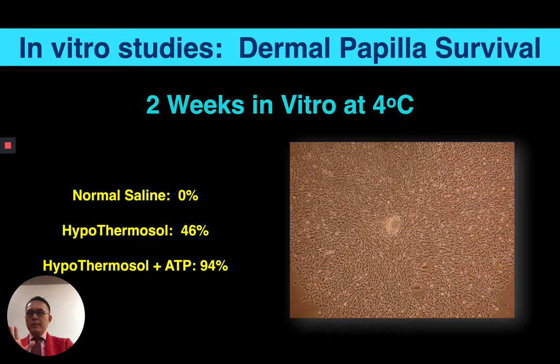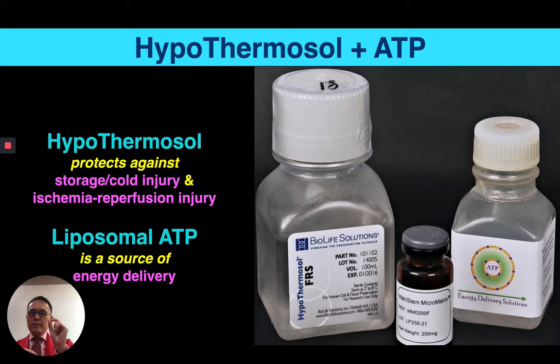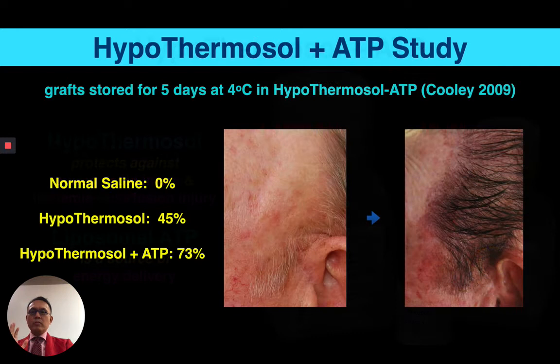Hypothermosol ATP — I like to call it Reese's peanut butter cups: they work together. Hypothermosol, in a cold environment, helps reduce storage and cold injury as well as ischemia reperfusion injury. We use it as a spray postoperatively. Liposomal ATP acts as an energy source — it helps maintain the integrity of the sodium-potassium ATP pump and gives the cell energy to combat acidosis and minimize injury.